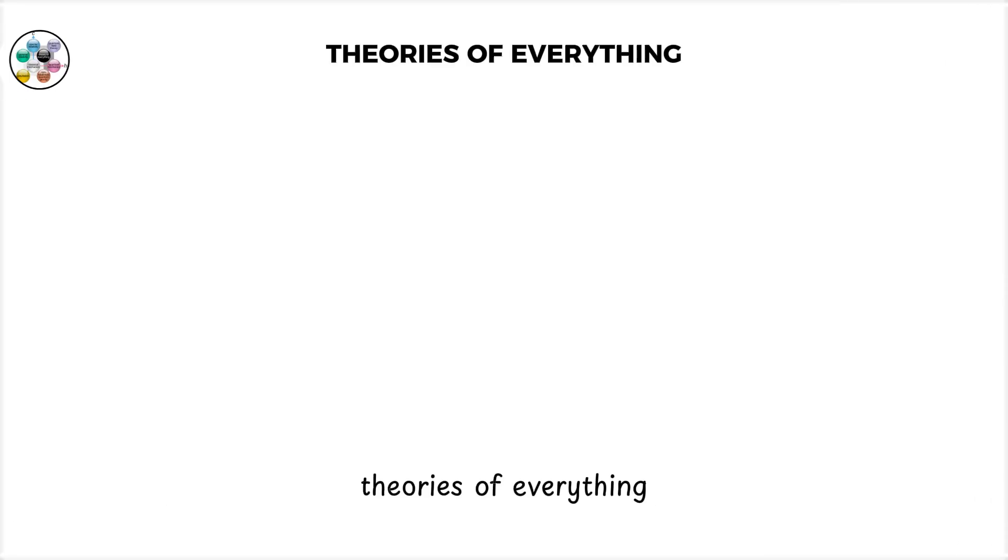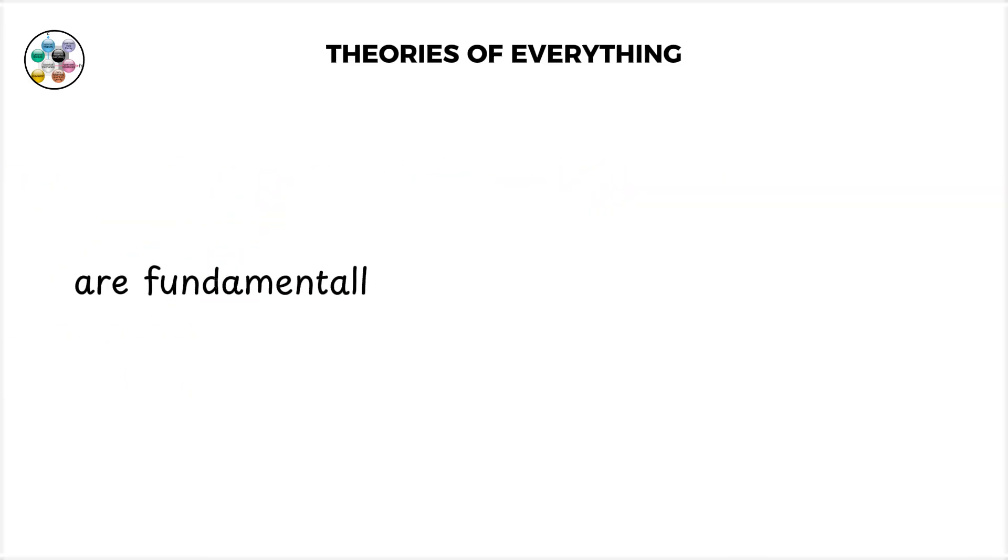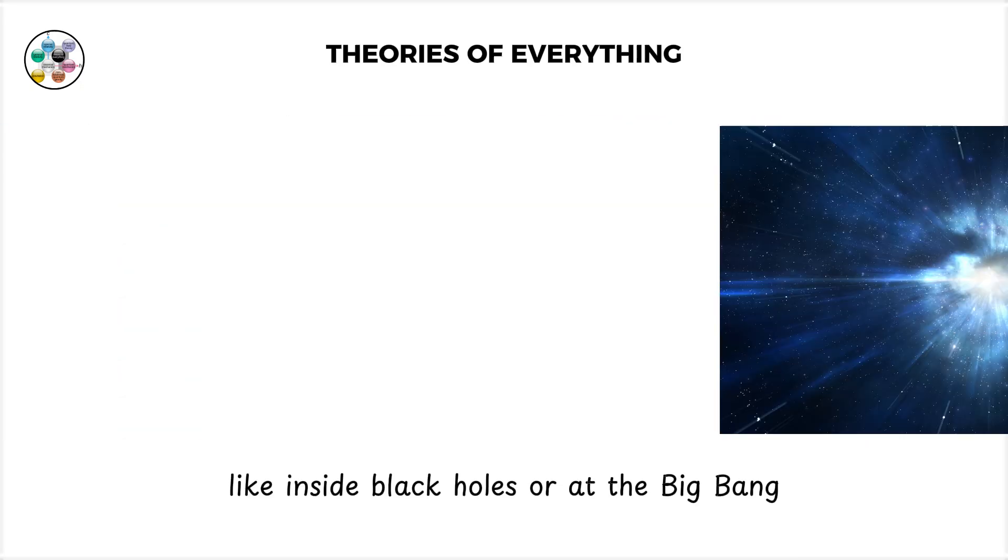Theories of everything. Despite its successes, physics is still incomplete. General relativity and quantum mechanics, the two pillars of modern physics, are fundamentally incompatible at extreme scales, like inside black holes or at the Big Bang.